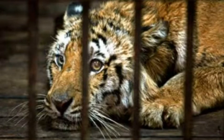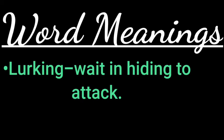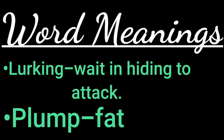The poet wants to say that the tiger is supposed to live in a jungle where he could catch its prey and eat. He has freedom in the forest, whereas he cannot do so in a cage. Here the poet is also indirectly saying that we have no right to snatch away the freedom of wild animals. Word meanings: lurking means to wait in hiding to attack; plump means fat.